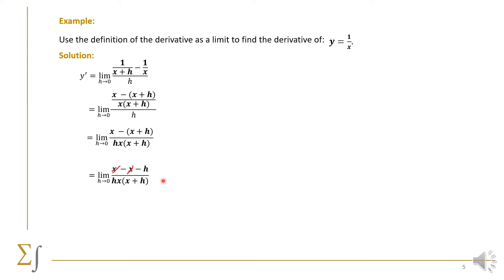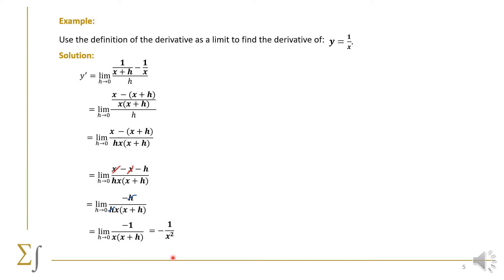Opening the bracket with the minus sign, we get minus x and minus h, so we have x minus x — which adds to zero — minus h, all over h·x·(x+h). We cancel the h in the numerator and denominator, arriving at the limit as h→0 of minus 1 over x(x+h). Substituting h=0, we arrive at minus 1 over x².